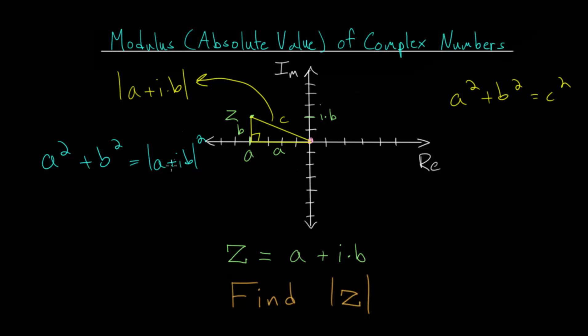Now to find the modulus or the absolute value, we just need to take a square root of each side. And since these are general, we can't simplify this further. Taking a square root of each side of this equation, we can simplify the right-hand side to just the absolute value of a plus ib, which is just the absolute value of our complex number z.